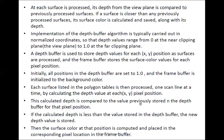The calculated depth is compared to the value previously stored in the depth buffer for that pixel position. If the calculated depth is less than the stored value, the new depth value is stored. For example, if you calculate a depth of 0.85, since 0.85 is less than 1, the new depth buffer value becomes 0.85. Then the surface color at that position is computed and placed in the corresponding pixel location in the frame buffer.